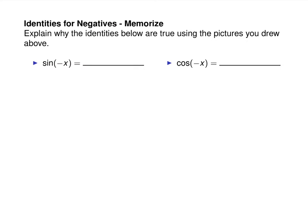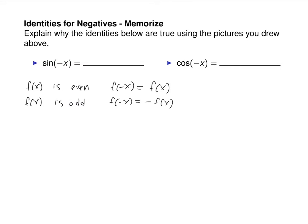There are identities for negatives because of the even-oddness. So if a function f(x) is even, what's true about f(-x)? It's just equal to f(x). And if a function f(x) is odd, what happens when you plug in negative x? It's equal to negative f(x). You just apply this definition with f being cosine or sine. Cosine is even, so when you plug in negative x, it's the same thing as plugging in positive x.